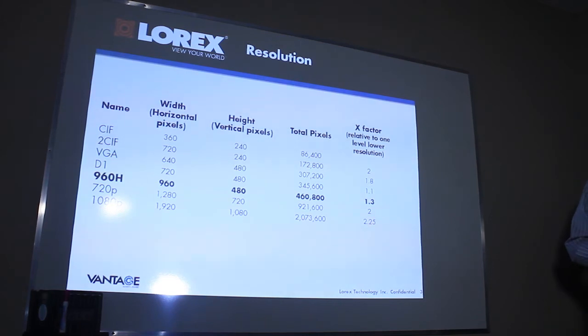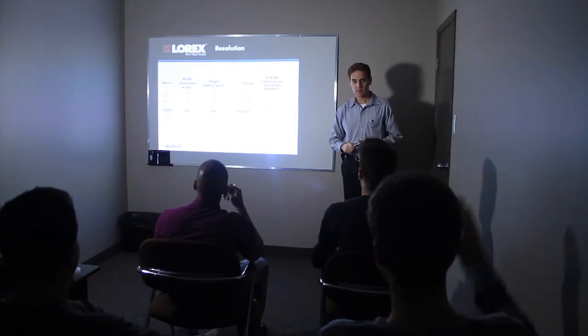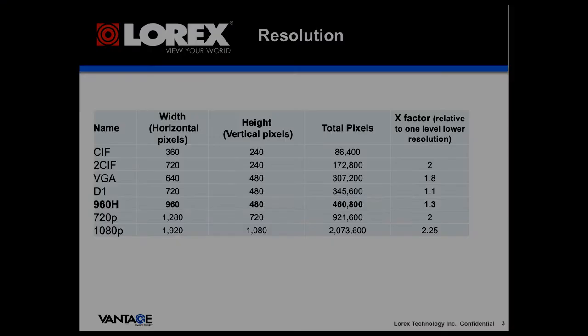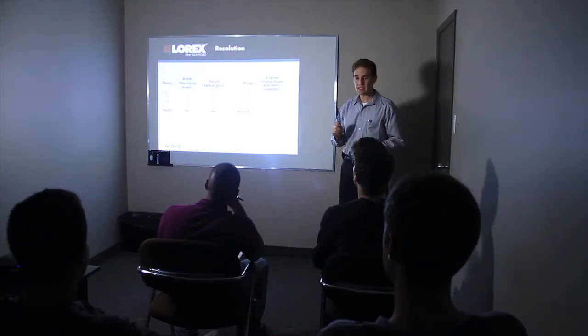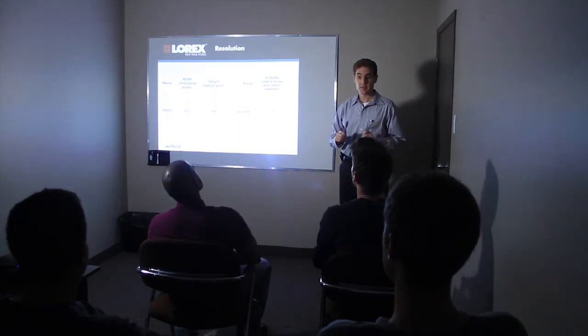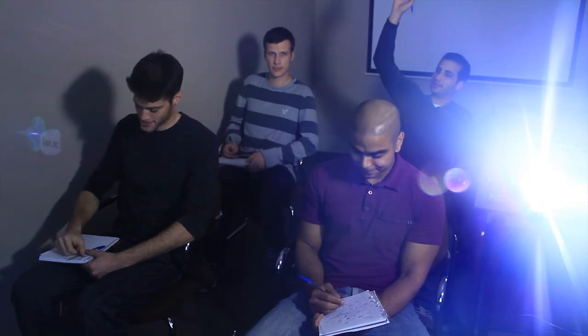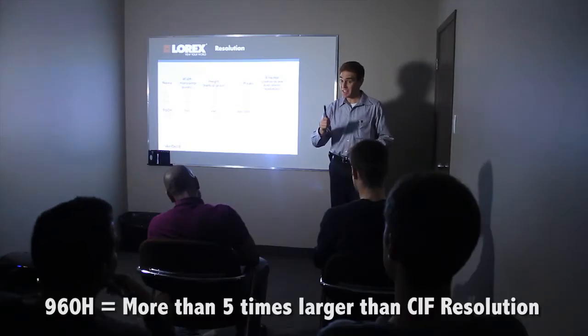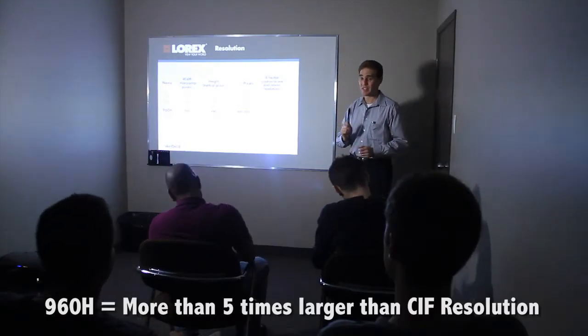And I'll start with a quiz. Who knows what H stands for? Dennis? H stands for horizontal, meaning that the 960H has 960 horizontal pixels. That is right. 960H stands for 960 horizontal by 480. Who knows by what factor is 960H larger than SIF? Gavin? Is it 4? Incorrect. David? More than 5? Correct — more than 5 times larger than SIF resolution.